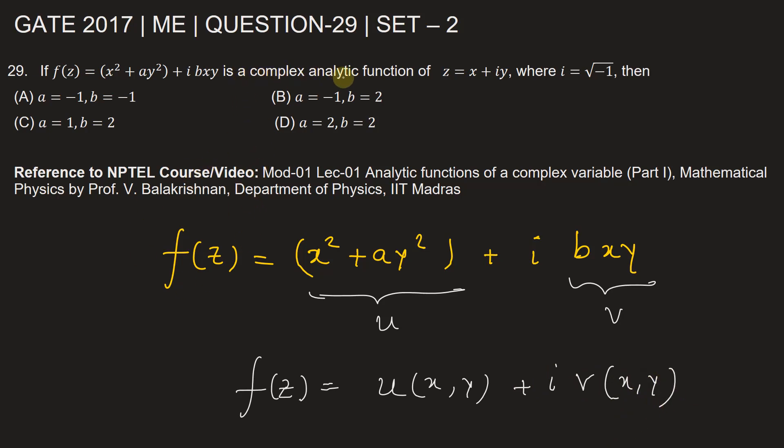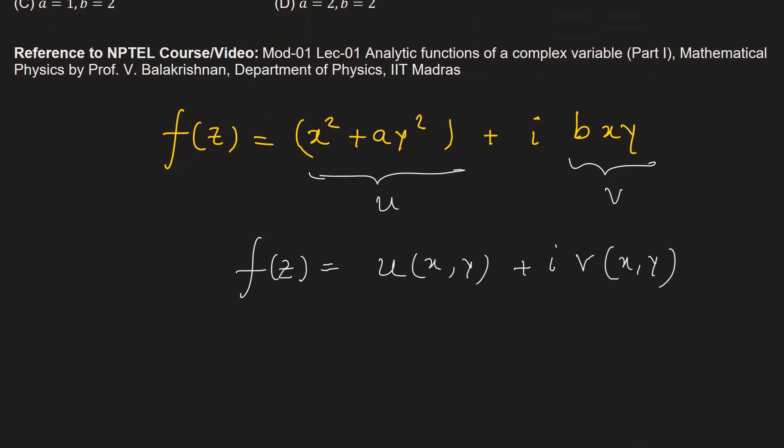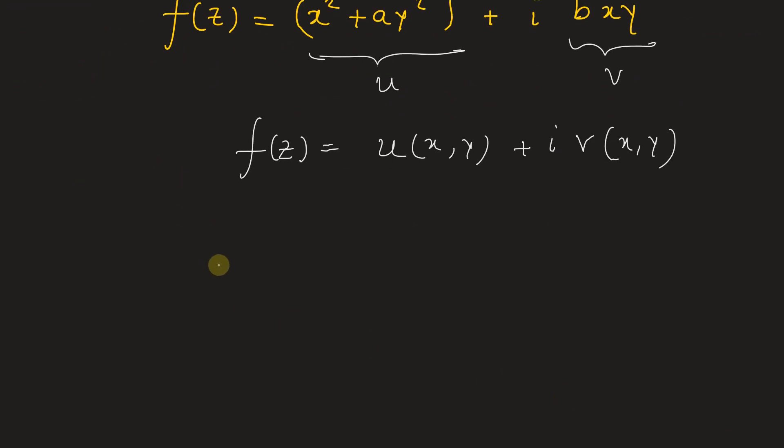If f of z is a complex analytic function, that means the partial derivatives of the real part and the imaginary part will follow the CR condition, which is partial derivative of u with respect to x equals partial derivative of v with respect to y, and partial derivative of u with respect to y equals negative of partial derivative of v with respect to x.